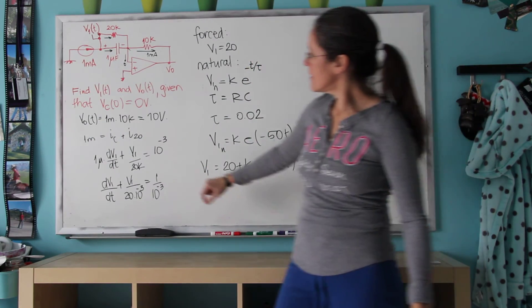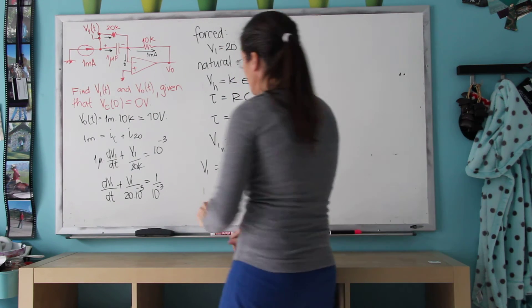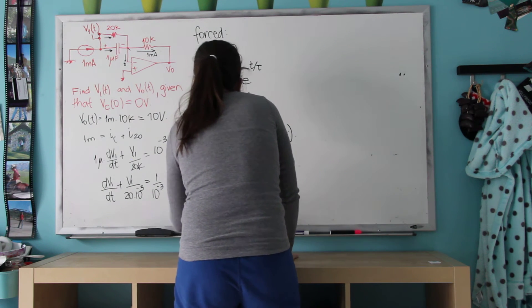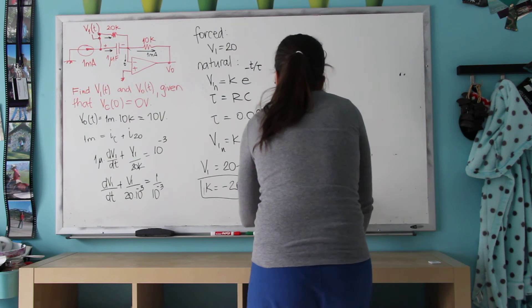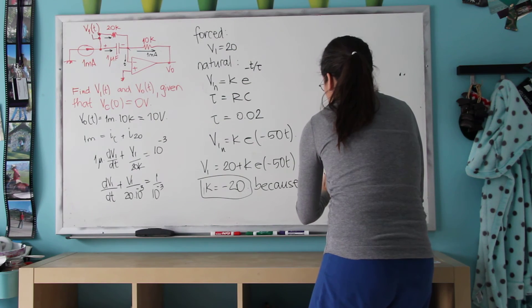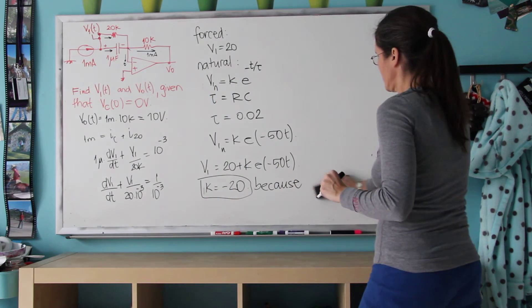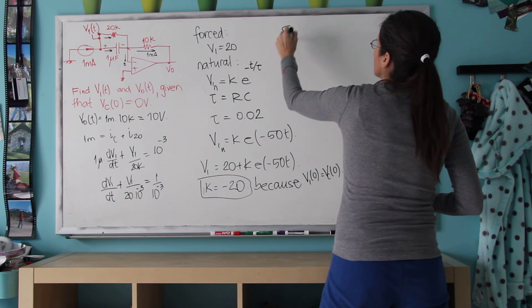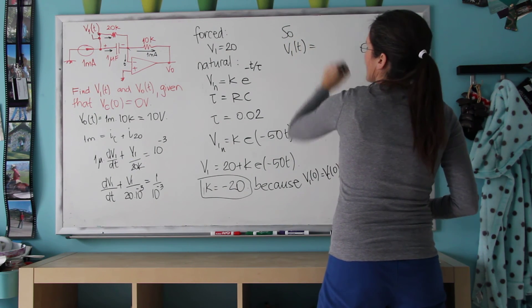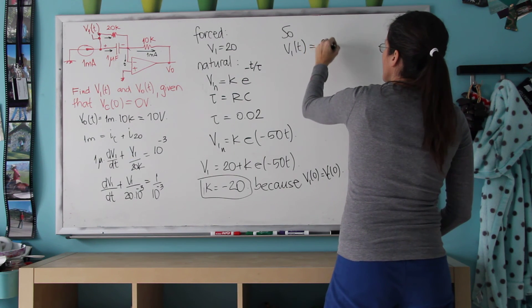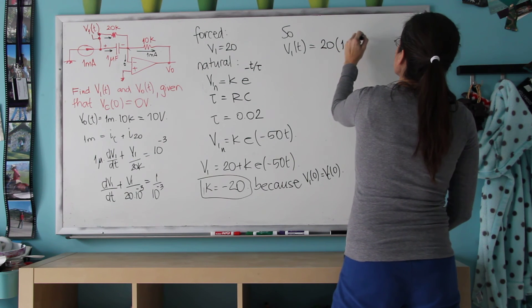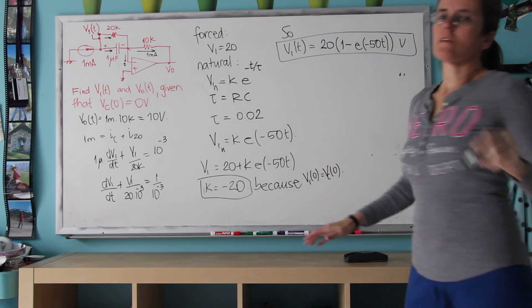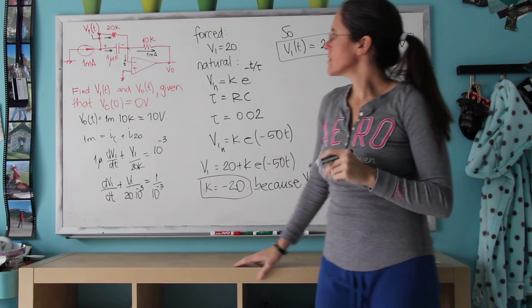And then we know that at zero, the voltage across the capacitor is zero. So we substitute here, and we find that K equals minus 20, because V1 of zero equals Vc of zero. So finally, V1 of T equals 20 times 1 minus e to the minus 50T volts. So this is the answer for this one, so long as the voltage across the capacitor is zero at zero.